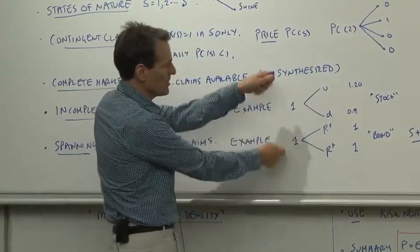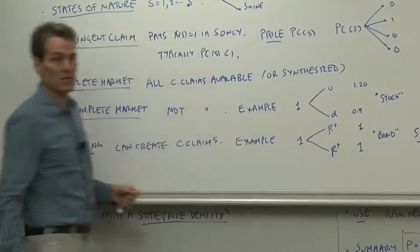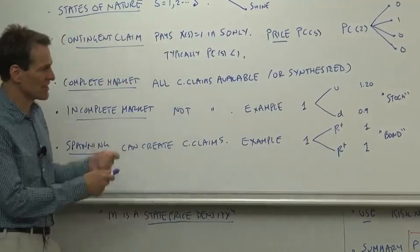Now, if you have both a bond and a stock, and you can take portfolios of the bond and the stock, then you can synthesize a contingent claim by long-short positions in the bond and the stock. And you're going to do that as one of your first problems, just to check that makes sense to you.